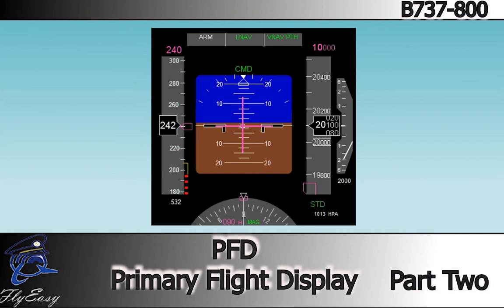This descent display shows the preset barometric setting has been selected but not engaged. The FMA throttle window is changed to show a typical display after the power has been reduced for the descent. The speed tape shows the target and current airspeeds and the MCP altitude is set for a 10,000 foot level off. The current descent rate is 2,000 feet per minute.